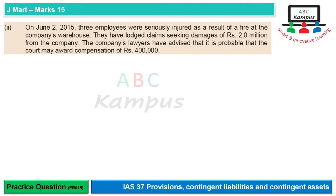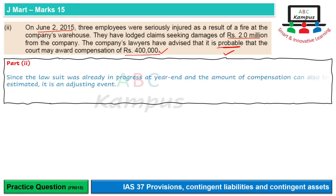Second part: On June 2, 2015, three employees were seriously injured as a result of a fire at the company's warehouse — yeh year end se pehle ka event hai. They have filed a claim seeking damages of rupees 2 million from the company. Company's lawyers have advised that it is probable that the court may award compensation of 400,000. Provision ka criteria bhi meet ho raha hai: there is an obligating event, present obligation hai, probable outflow hai, aur reliable estimate bhi available hai — 400,000. Since the lawsuit was already in progress at year end and the amount can be estimated, yeh adjusting event hai aur provision recognize honi chahiye.